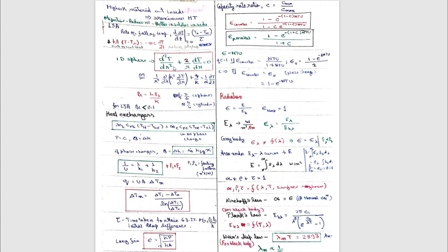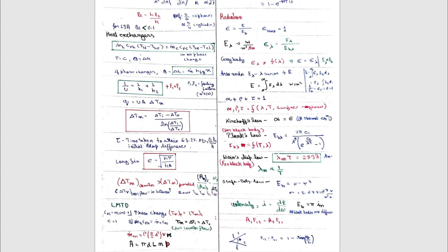So definitely write it as short and concise as possible — only the important formulas. The second thing is how you write it. I've used different colors to keep it organized. Even if written in a congested manner, different colors help you read it clearly because the brain differentiates between colors well. For example, the counter flow formula is in red and parallel flow is in green — if you know the counter flow formula you can remember the parallel flow formula. You can develop your own color coding.